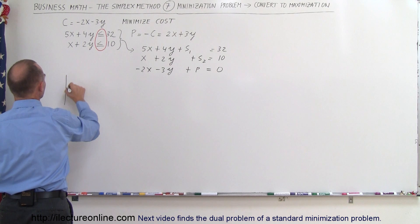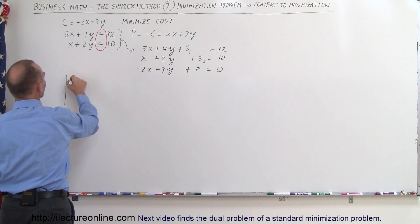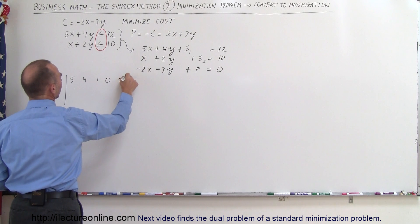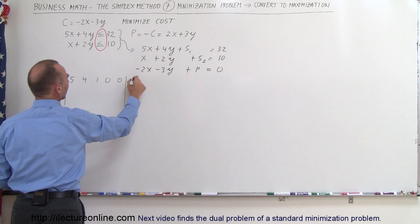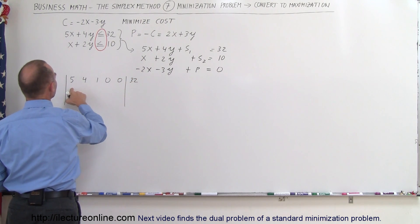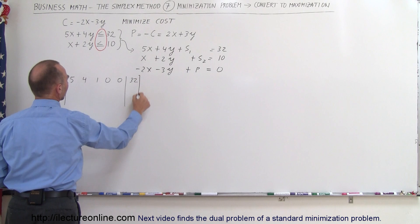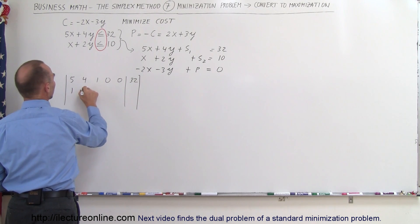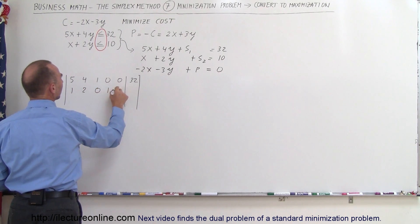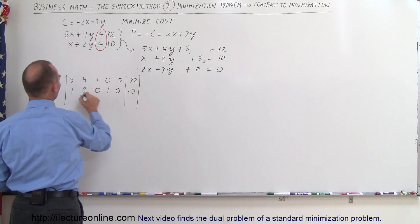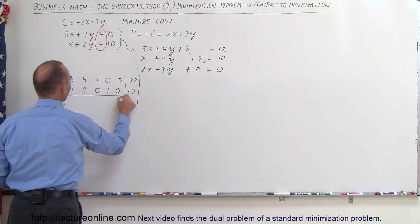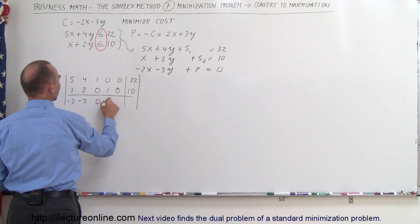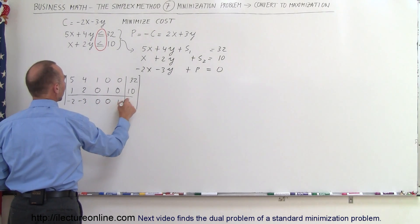Now we take those three equations and put them in the simplex tableau. The first row is: 5, 4, 1, 0, 0, and 32. The second row is: 1, 2, 0, 1, 0, and 10. And then below the line, the bottom row is: minus 2, minus 3, 0, 0, 1, and 0.